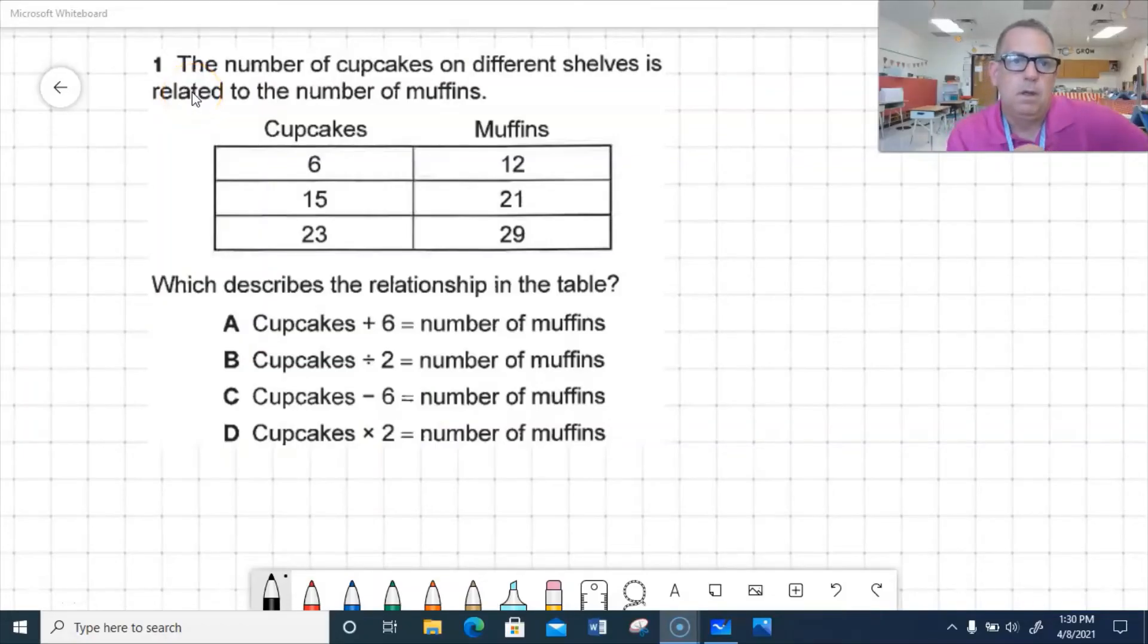Okay, we've got a few guided practice problems we're going to work on together. You follow along as I read. It says, the number of cupcakes on different shelves is related to the number of muffins. So my first column is talking about cupcakes. And my next column is talking about muffins. And what we need to find out is which describes relationship in this table? So would it be A, B, C, or D? Okay, let's check that out.